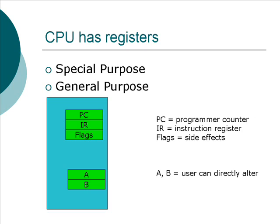A CPU has what are known as registers. The processor has special-purpose registers that generally have a very specific purpose and use inside the processor. Some registers the user doesn't even have control over, at least not directly, like the instruction register. The program counter always points to a location in memory of the next instruction to be executed. The instruction register contains the actual instruction currently being executed. The flags registers contain the result of mathematical operations previously done on the general-purpose registers. In this example I have general-purpose registers A and B. Sometimes you might only have one; some processors have 16.